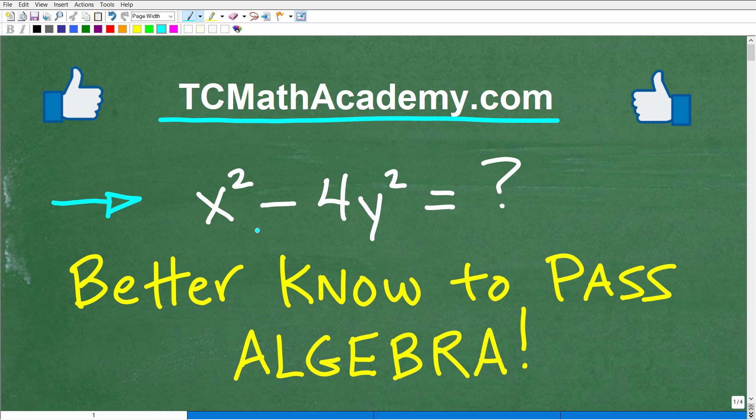So the objective here is to factor this expression. We have x squared minus 4y squared is equal to what? So this is factorable, but how do we factor it? Well, of course, that is the question I'm going to answer in this video.